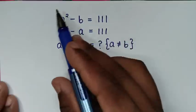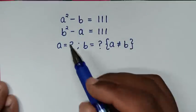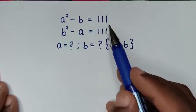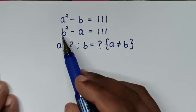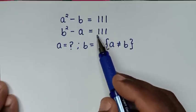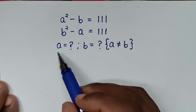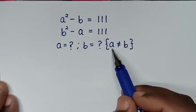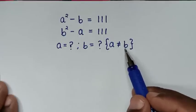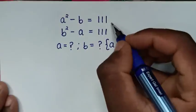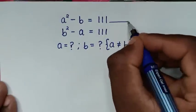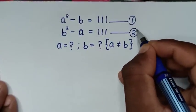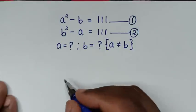Welcome. We are going to solve this math problem: a² minus b is equal to 111, and b² minus a is equal to 111. We need to find the values of a and b such that a is not equal to b. We start by labeling these as equation 1 and equation 2.